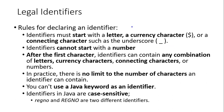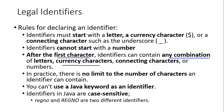However, you cannot create an identifier starting with a number. You can't say '4a' — that 4 is a number and you can't start with a number. After that first character, you can have any combination of numbers, currency characters, or connecting underscore characters. Special symbols are not allowed — not all special symbols, except the dollar and underscore.